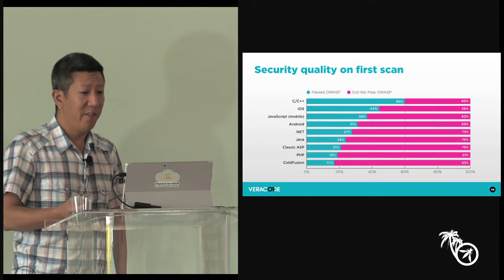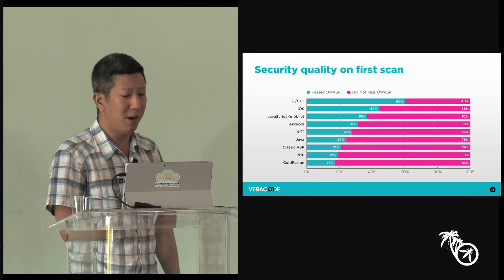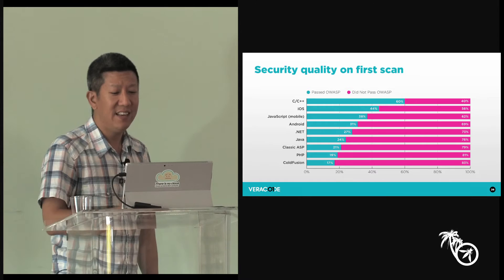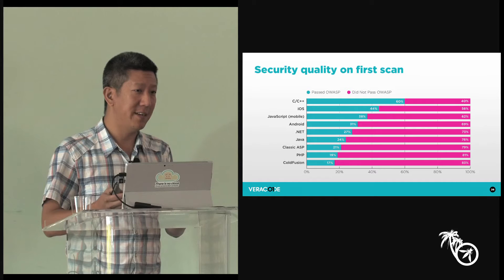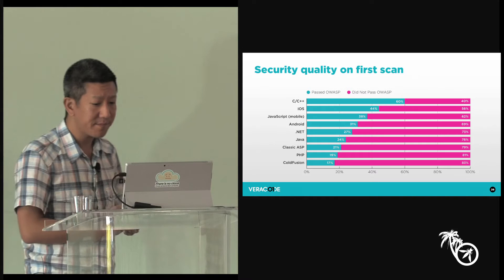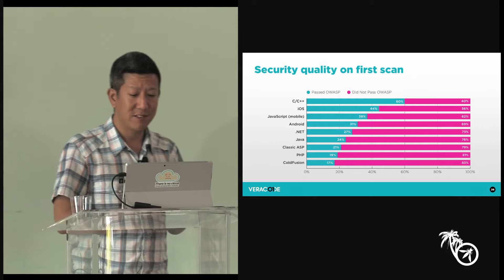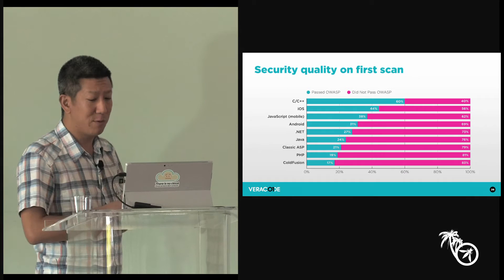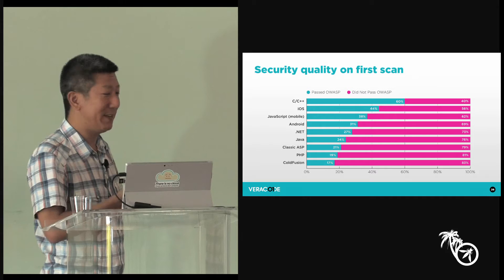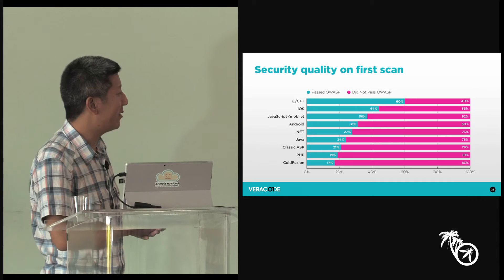Going back to compare industries against their initial pass rate against the OWASP policy, but sliced by language instead of by industry: it's not surprising that C and C++ had a higher pass rate because you don't really use C and C++ to write web apps very often. OWASP is not the best fit for mobile or client-side applications. My only conclusion from this is that scripting languages need help — classic ASP, PHP, and ColdFusion are really down near the bottom and doing really badly.